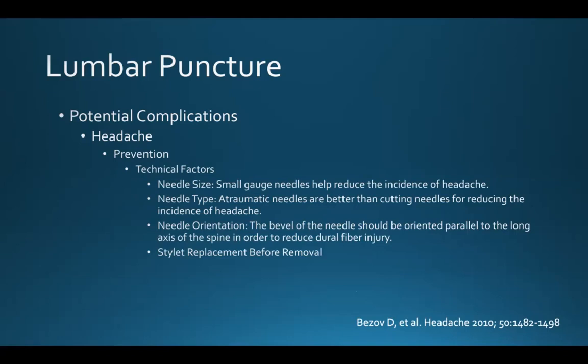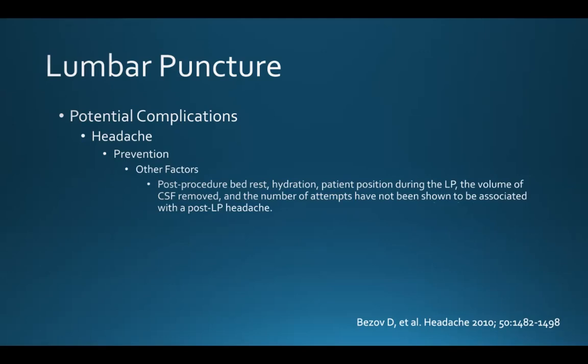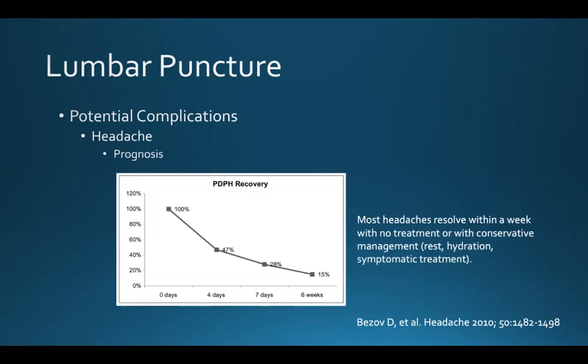Several technical factors can help prevent post-LP headache. Smaller gauge needles can help reduce incidence. Atraumatic needles, as opposed to cutting needles, can reduce incidence. Remember needle orientation — the bevel should be oriented parallel to the long axis of the spine to reduce injury to dural fibers. And replace the stylet before removing the needle. Other factors such as post-procedural bed rest, hydration, patient position during the LP, the volume of CSF removed, and the number of attempts have not been shown to be associated with the post-LP headache.